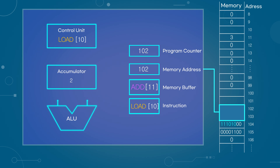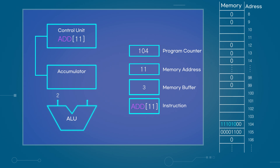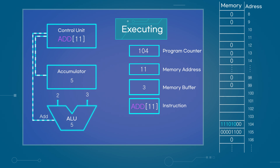Since this is a command to add the value at address 11, it is sent to the instruction register. Then, two is added to the program counter again, and the instruction is transferred to the control unit for decoding. To execute the addition command, the data stored in the accumulator register is sent to the arithmetic logic unit. Next, address 11 is loaded into the memory address register, and the data at address 11 is retrieved and stored in the memory buffer register. This value, being data rather than an instruction, is also sent to the accumulator register. The value is processed in the arithmetic logic unit, and the result is stored back in the accumulator register. This process of performing calculations in the ALU is referred to as the execution phase.